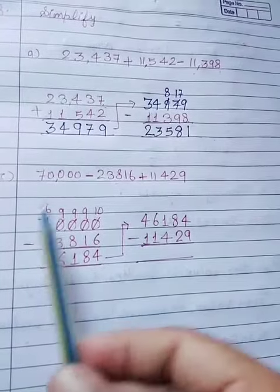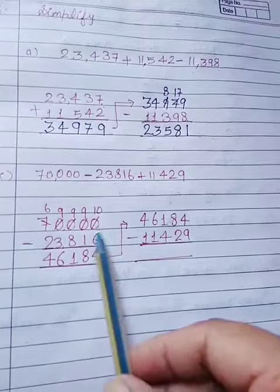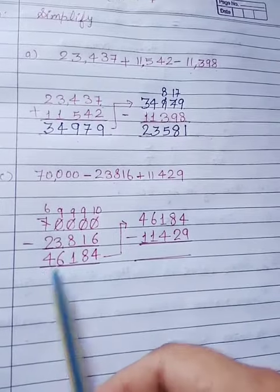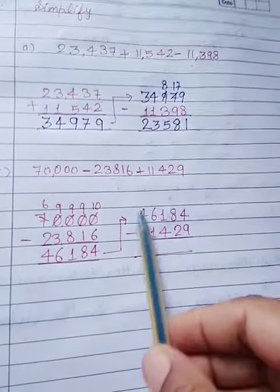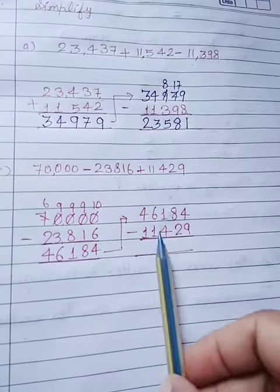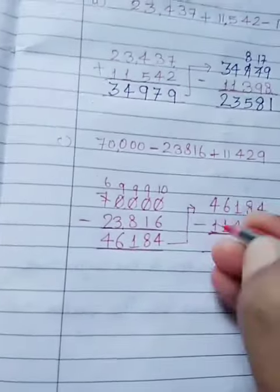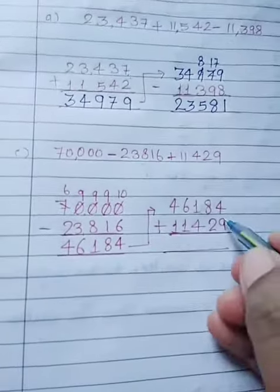इसमें first में minus है तो हम first दो डिजिट को minus करेंगे. Minus करने के बाद हमारा answer आया 46,184. So we write first, then we add 11,429.